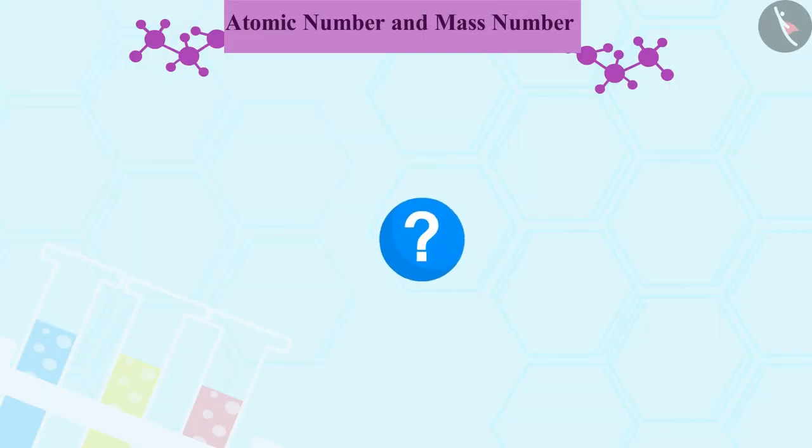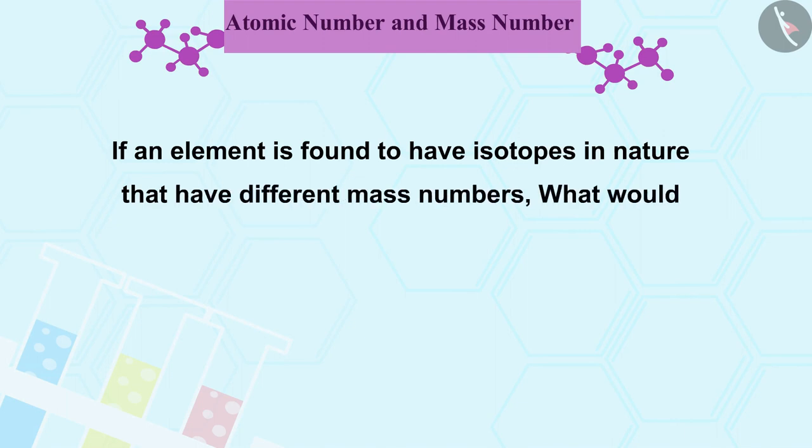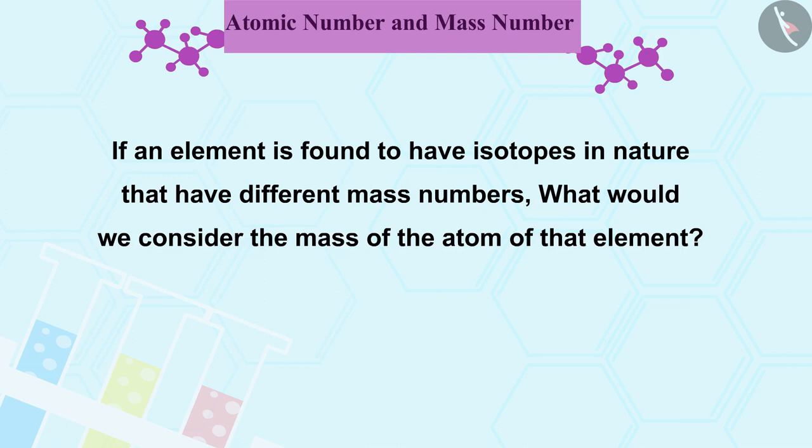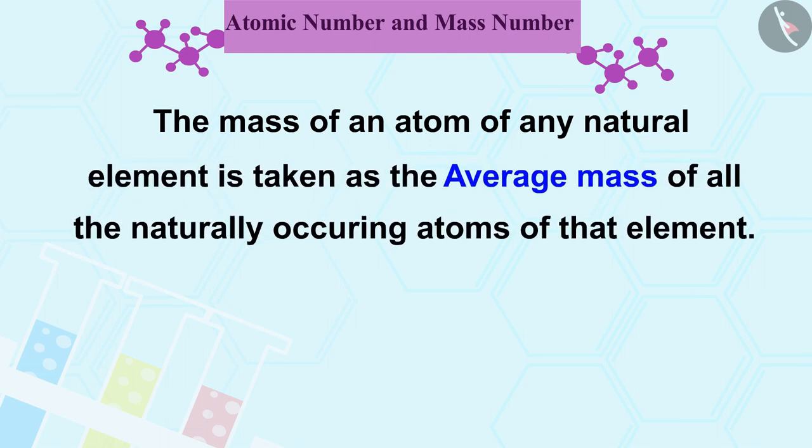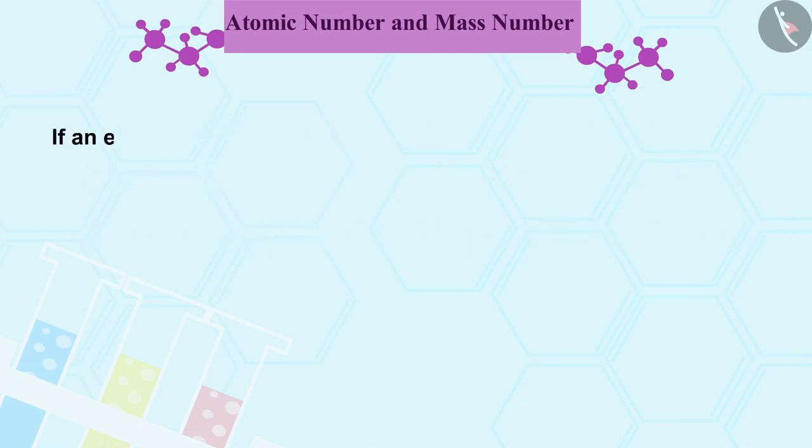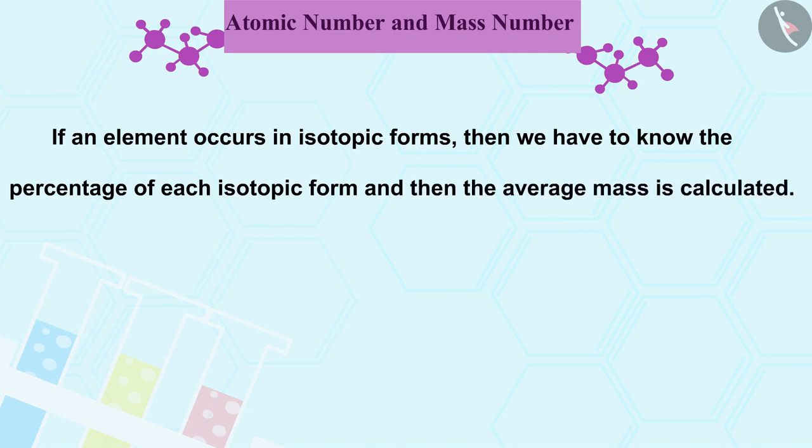But now you might be thinking that if an element is found to have isotopes in nature that have different mass numbers, what would we consider the mass of the atom of that element? Let's find it out. The mass of an atom of any natural element is taken as the average mass of all the naturally occurring atoms of that element. If an element occurs in isotope forms, then we have to know the percentage of each isotope form and then the average mass is calculated.